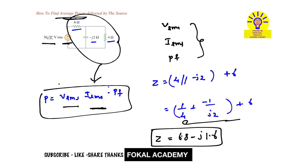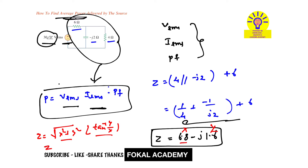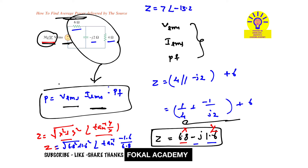This is in complex number form, so we convert it to polar form. The amplitude is the square root of X squared plus Y squared, and the phase angle is the tangent inverse of Y over X. Substituting X equal to 6.8 and Y equal to minus 1.6, we get Z equal to the square root of 6.8 squared plus 1.6 squared, with angle tangent inverse of minus 1.6 divided by 6.8. This gives impedance Z equal to 7 ohms with phase angle minus 13.24 degrees.